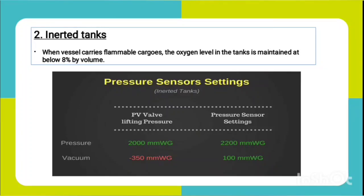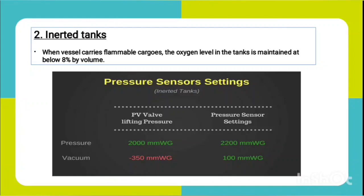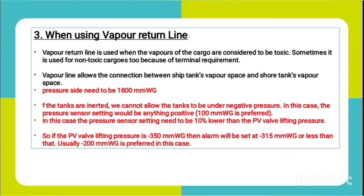For inerted tanks, the pressure sensor setting for positive pressure will be 10 percent more than the PV valve pressure. If the pressure goes over the designed PV valve pressure by 10 percent, it will give an alarm. For the vacuum side, we set a positive pressure close to zero - we have taken 100 mm wg for the vacuum section.